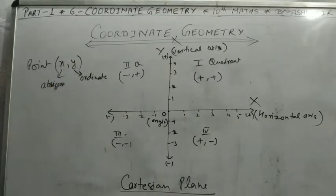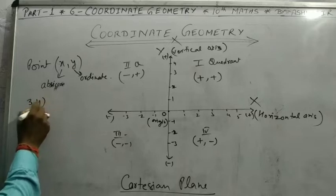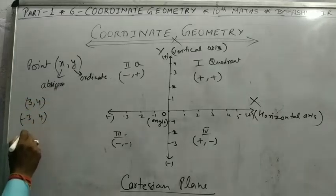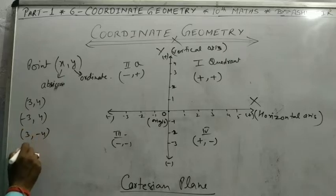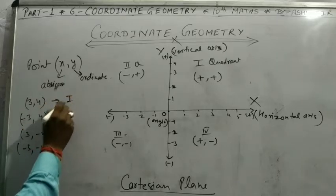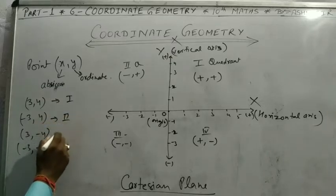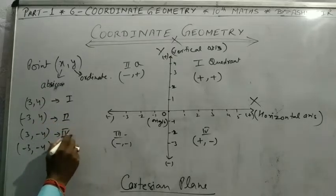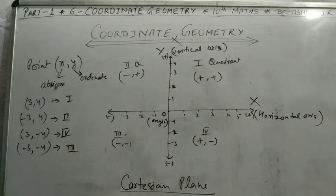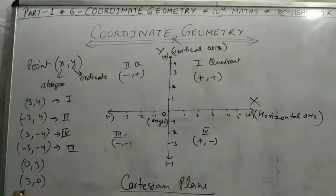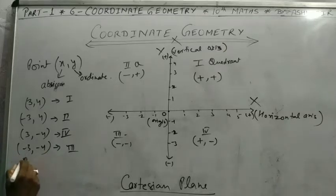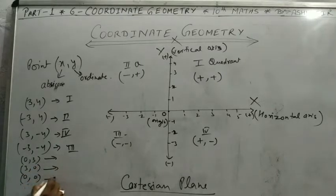For example: the point (3, 4) lies in the first quadrant, (-3, 4) lies in the second quadrant, (3, -4) lies in the fourth quadrant, and (-3, -4) lies in the third quadrant. But if we write (0, 3), (3, 0), or (0, 0), we need to determine where those points lie.